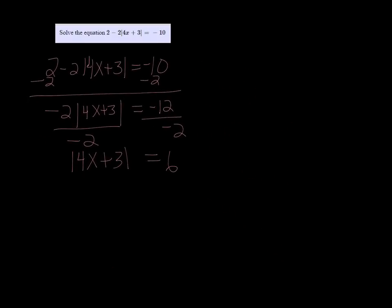From here, you would solve the absolute value equation as normal. So take 4x plus 3 out, make it equal 6, and then take it out again, and have it equal negative 6. Solve both equations.